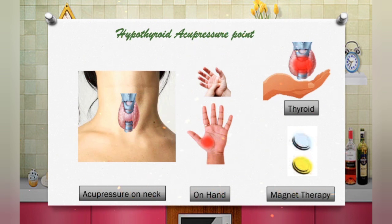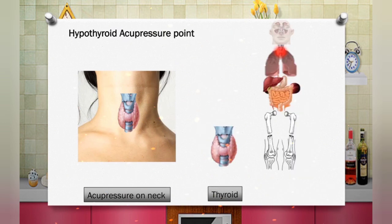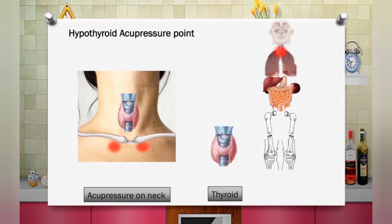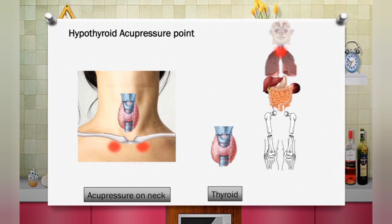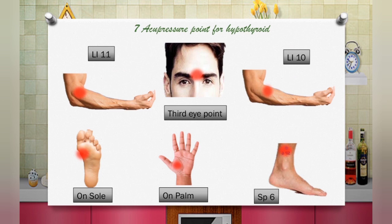This is for both hyperthyroid and hypothyroid issues or disease, which is very much a problem in this new generation. Basically, you can see on the screen there are two energy spots or points where you can put pressure — called acupressure — to support your thyroid hormone to be released properly. It is on the edge of the bone of your neck.